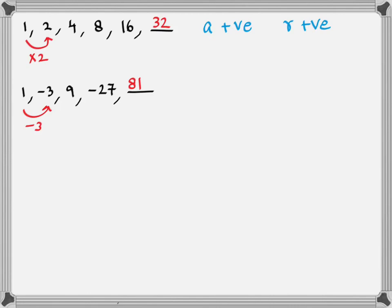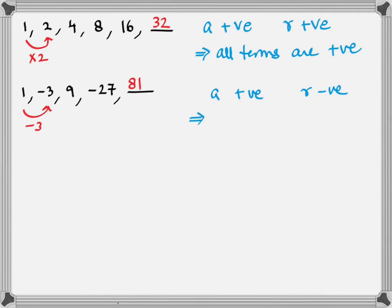If the first term is positive and the common ratio is positive, then all the terms in the series are positive. Similarly, if the first term is positive and the common ratio is negative, then the sign alternates — the series consists of positive and negative terms.